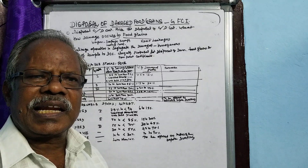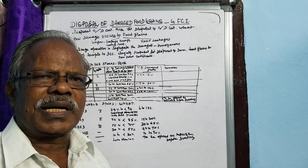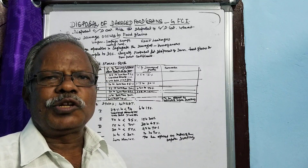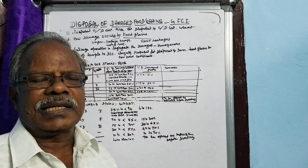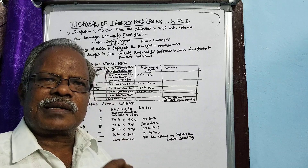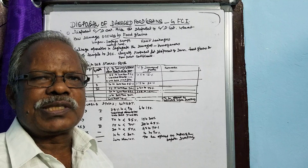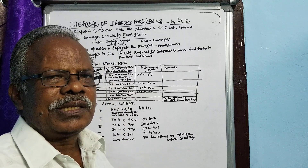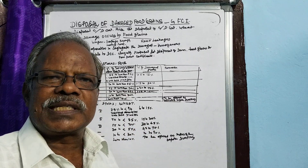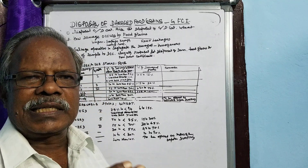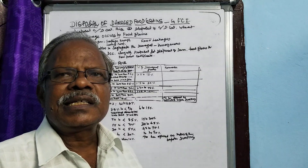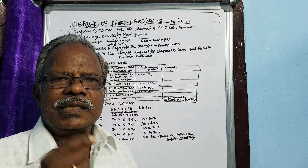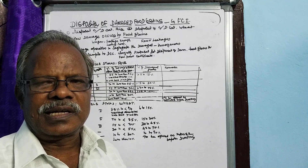Disposal of C and D category of rice: C category of rice can be issued as such without any improvement, because up to B category the rice can be procured, and from B it may be downgraded to C due to an increase of discolored grains. The discolored grains may become higher, so it may become C category. That's why the C category discolored limit is raised to 7%, so there may not be any problem in disposal of C category rice, because the damage is up to 5% and it is coming under the PFA limit. With regard to D category rice, if it is exceeding more than 0.5% or it is emitting musty odor, this has to be cleaned and issued.